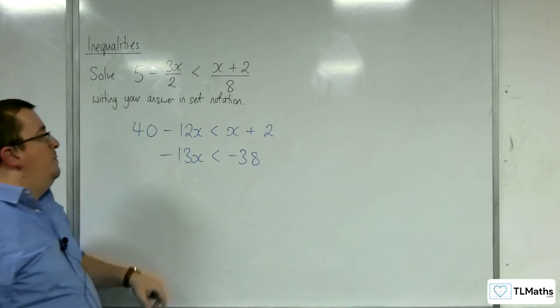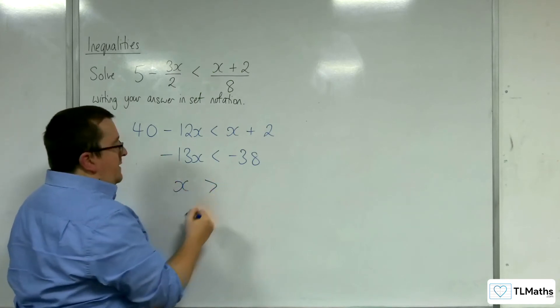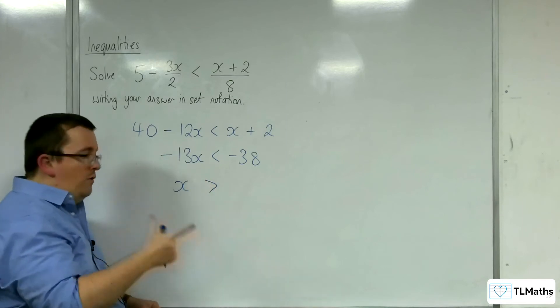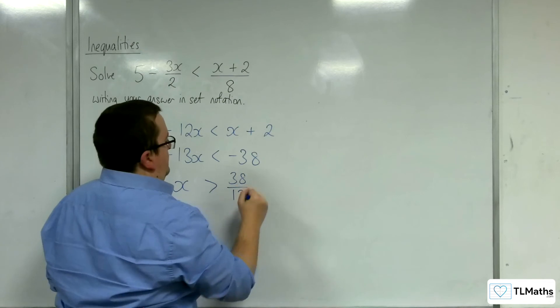And then, divide through by -13, and I'm going to get x > 38/13, because the sign will change direction.